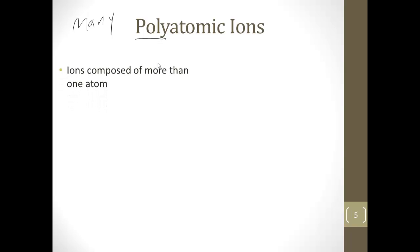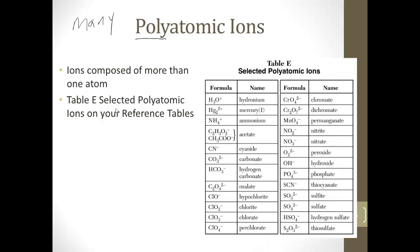So a polyatomic ion is an ion composed of more than one atom. And if you look at your reference table, table E is your selected polyatomic ions. And it looks like this, and here's a bunch of them so you don't have to memorize, but you have to know how to use these.